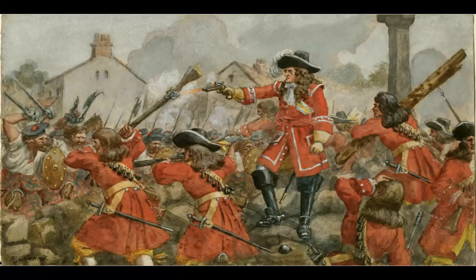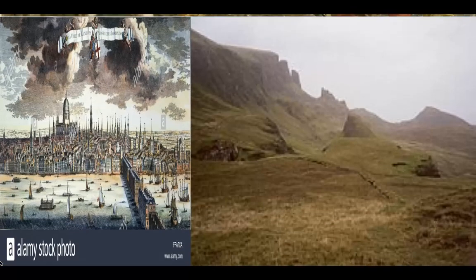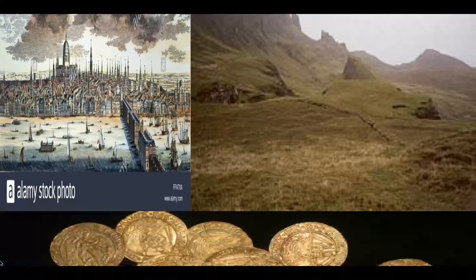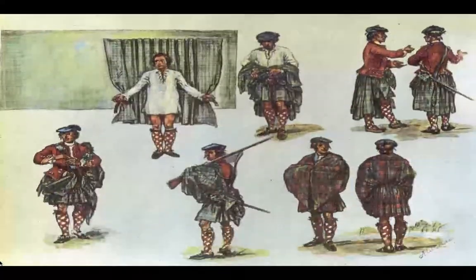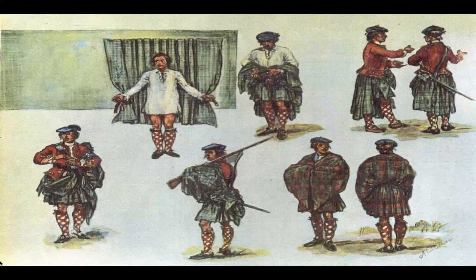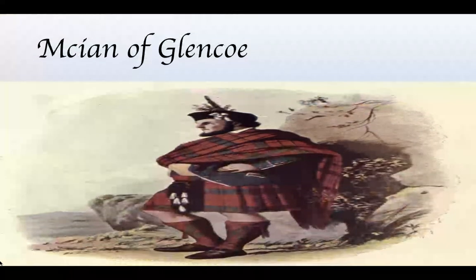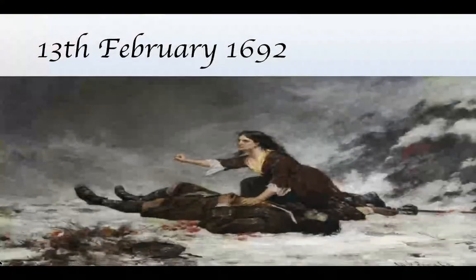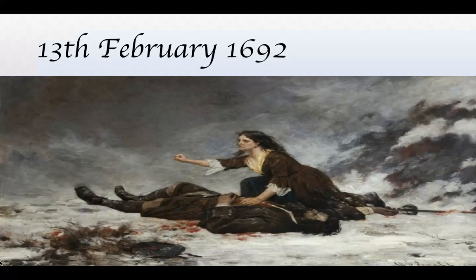After the rebellion, the government in London asked the Highland clan chiefs to pay homage to William for a £12,000 reward. Most clan chiefs accepted and paid homage on time. However, MacIain of Glencoe delayed by seven days until winter, so he and his entire clan were massacred on 13th February 1692, in what became known as the Massacre of Glencoe.